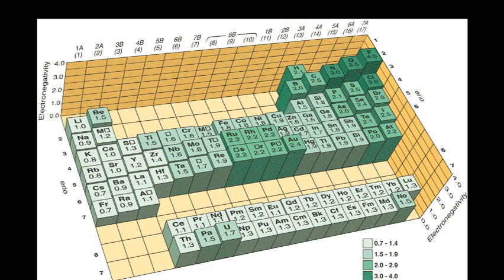If an element is bonded to itself, for example iodine to another iodine, then the bond is a covalent one. Non-polar and covalent.